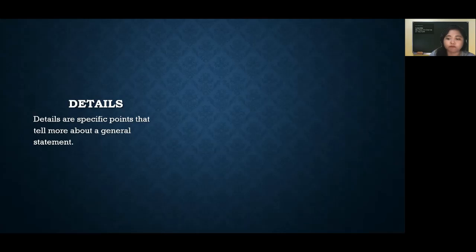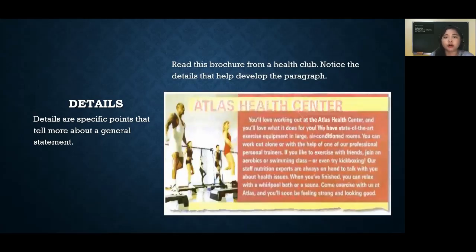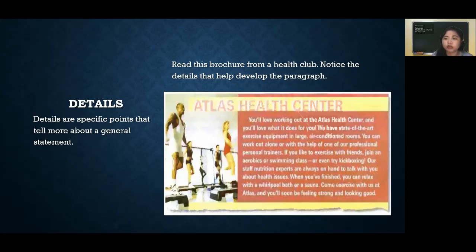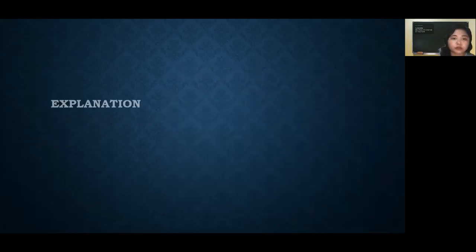For example, let me show you a brochure. This brochure is about Atlas Hope Center, a health club. The brochure contains details about why people should love working out there — reasons such as the large equipment, air-conditioned rooms, the ability to work out with friends, and the variety of workout options available. That is how you support your topic sentence by giving details.